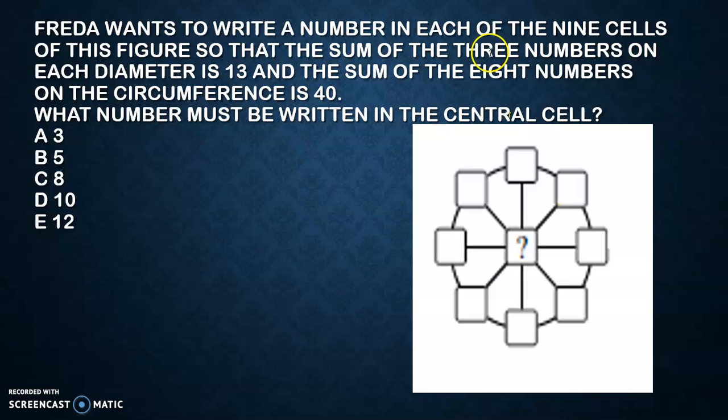Here it says that Freda had nine cells - on the circumference it has eight numbers and in the center it has one number. The diameter sum is 13 and all the numbers if added together excluding the center one, you got 40. How many diameters are there? There are four diameters and each diameter has the same sum and contains the same central cell.